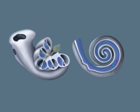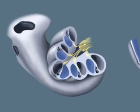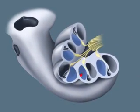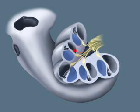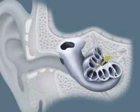Sound vibrations enter the cochlea via the vestibular ramp. As they travel, they stimulate sensory organs — the organs of Corti — which transform the vibratory movement into nerve impulses.